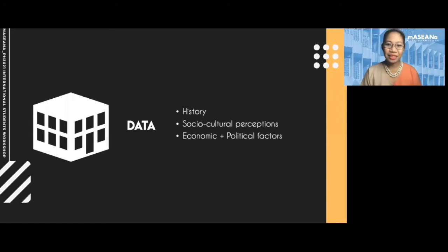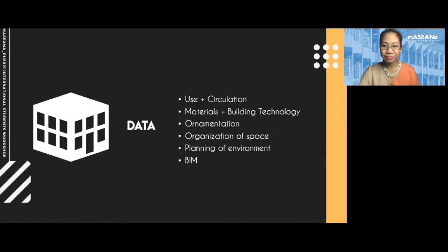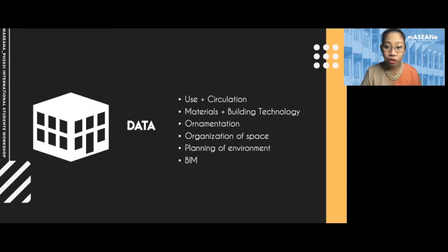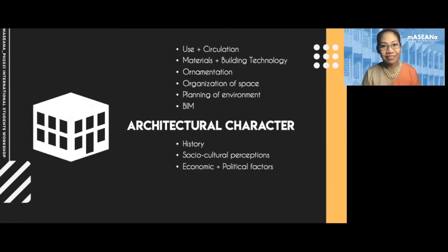When we study buildings, we look at two sets of data: archival data and sociocultural data. The other type of data is physical data — actual observations on form, space, circulation, and organization. Correlating these two sets of data allows us to understand architectural character.